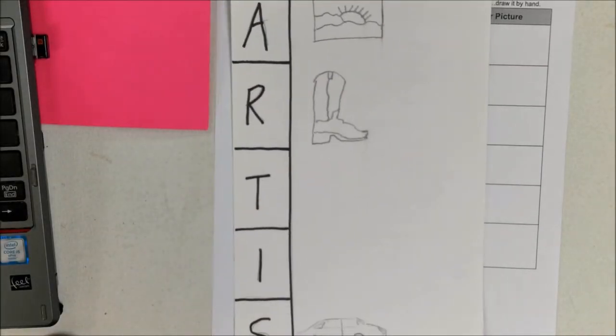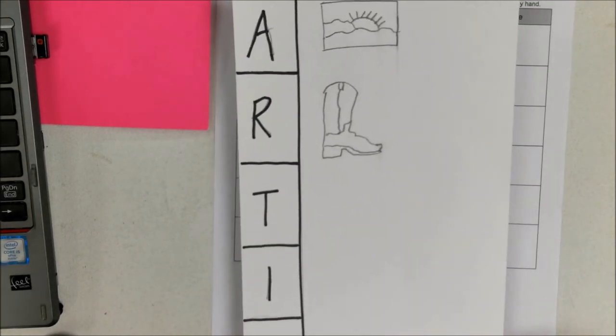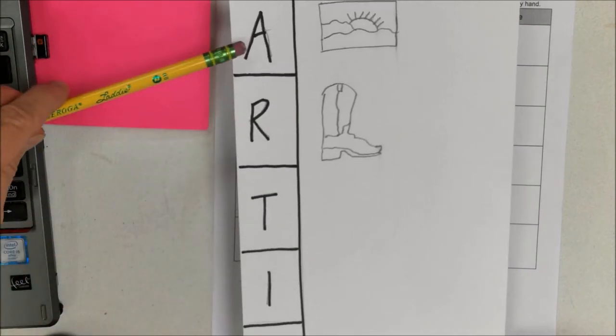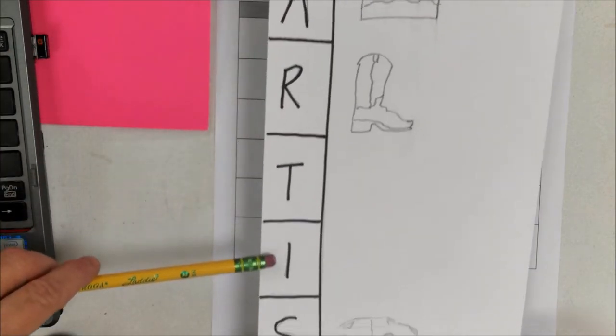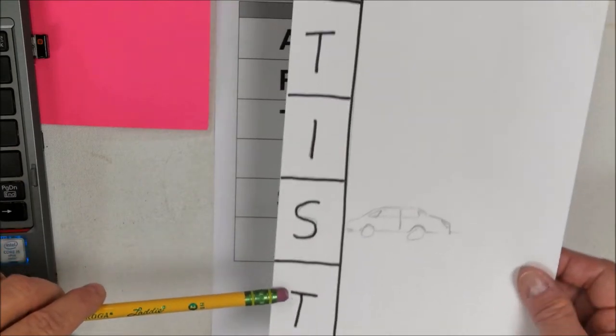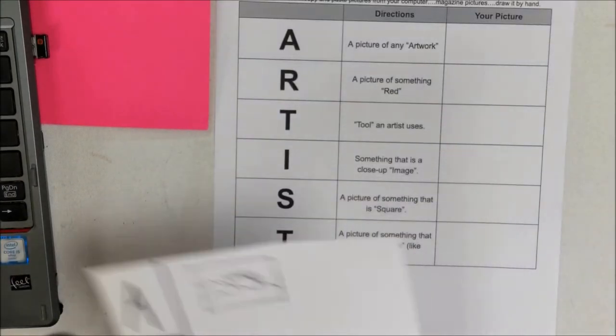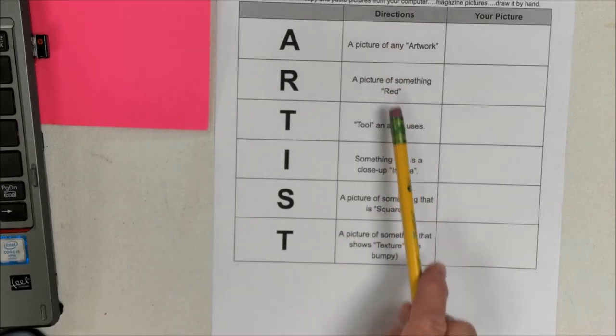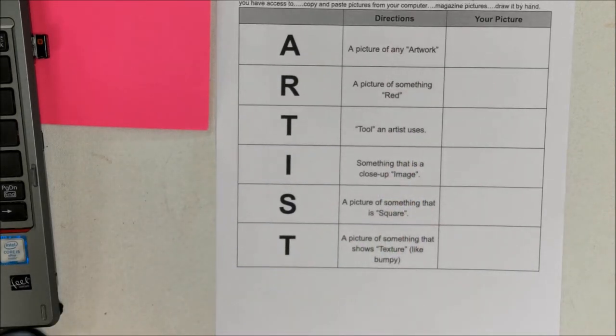And so I've started a drawing that looks like that. What you would do is get a piece of paper, draw sections that say A-R-T-I-S-T, and then in each of those sections you would draw different things inside that section.